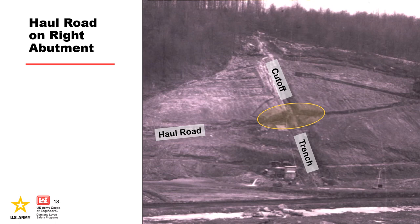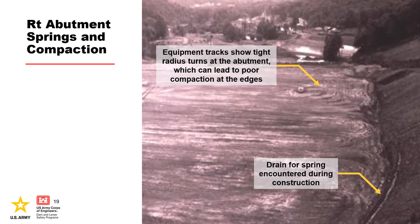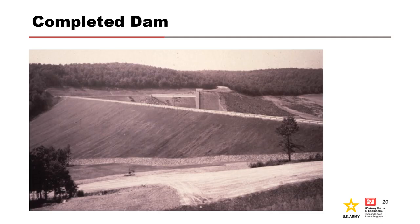Adding to the potential list of issues, there was a haul road that cut diagonally across the slope of the right abutment, originally built for construction of the outlet works. During construction, springs were encountered both upstream and downstream of the dam centerline. Emerging seepage was initially forced upward on the abutment by progressive fill placement. Eventually, drains were placed which allowed seepage from the springs to exit the foundation. The dam was completed in October of 1952.